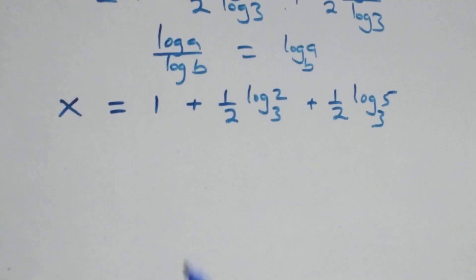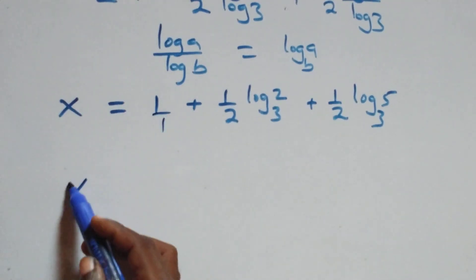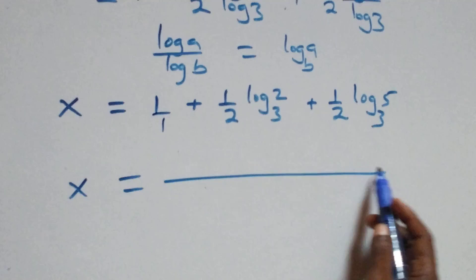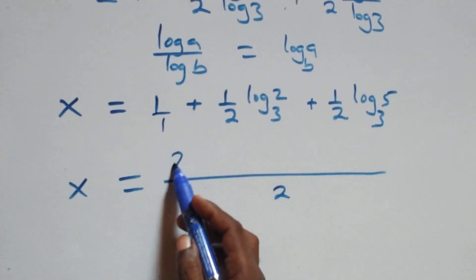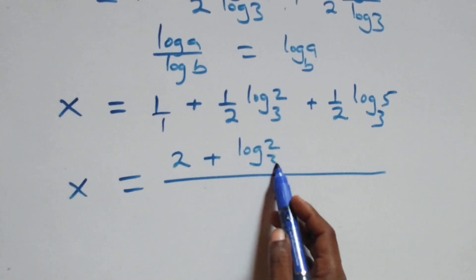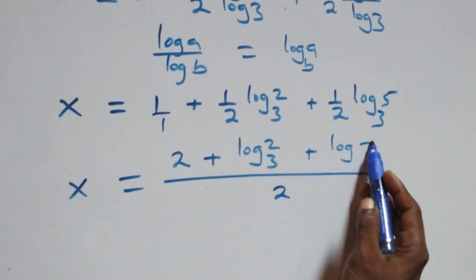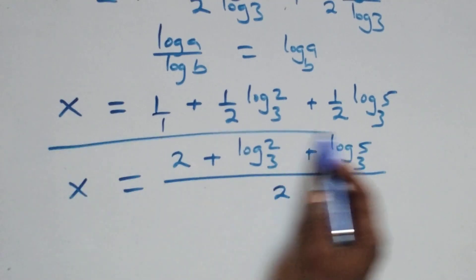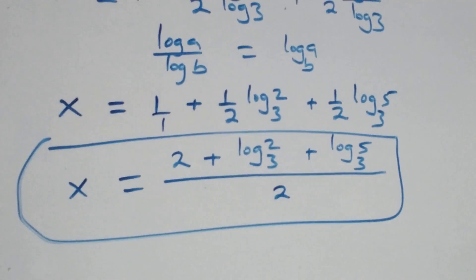We bring this together as one fraction. We have x equals to 2 plus log 2 base 3 plus log 5 base 3, all over 2. That is the value of x.